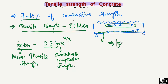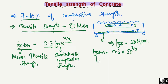For example, if we have a characteristic compressive strength fck of 50 megapascals, the tensile strength according to the Eurocode is 0.3 multiplied by 50 to the power of 2/3. Solving this, we get a mean tensile strength of 4.07 megapascals.